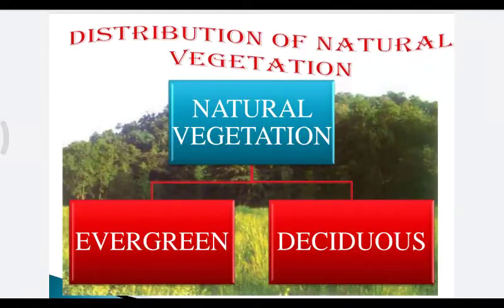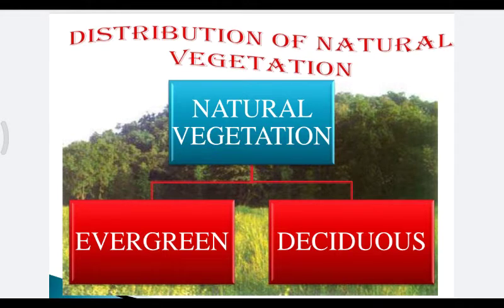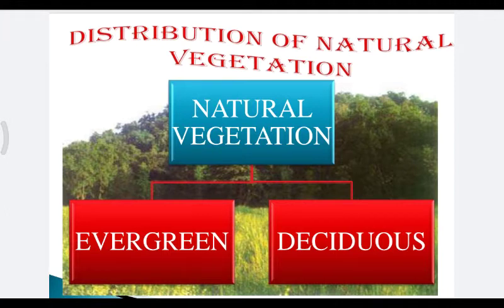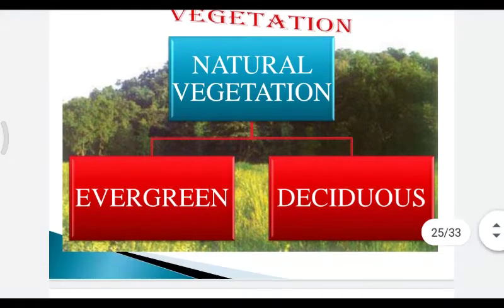Natural vegetation can be classified into evergreen forest and deciduous forest. In evergreen forests, trees do not shed their leaves simultaneously in any season of the year. In deciduous forests, trees shed their leaves in a particular season to conserve loss of moisture through transpiration.